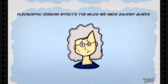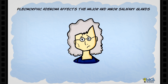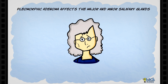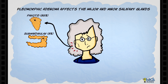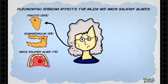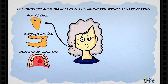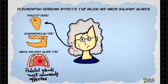Pleomorphic adenoma is the most common benign salivary gland tumor affecting both the major and the minor salivary glands. The parotid gland is the most common site, followed by the submandibular gland and the minor salivary glands. Sublingual glands are rarely affected, and the palatal glands are the most commonly affected minor salivary glands.